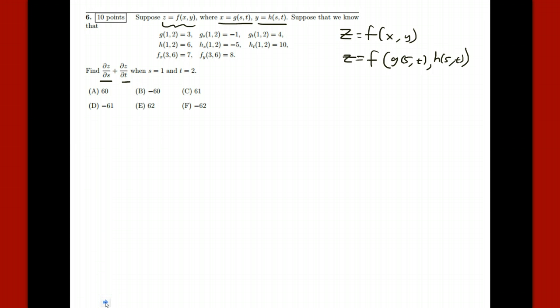And so the formula for the chain rule says, okay, if you want to take z's derivative with respect to s, then you first have to take z's derivative with respect to x and multiply it by x's derivative with respect to s. Then z's derivative with respect to y and multiply it by y's derivative with respect to s.